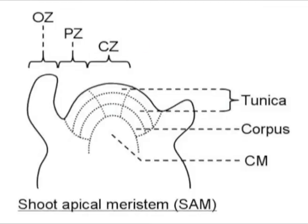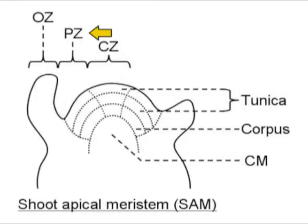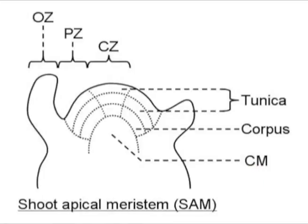The shoot apex can be divided into various regions according to the determined fate of the cells within each region. The central zone consists of small, undifferentiated, and slowly dividing cells. The peripheral zone consists of rapidly dividing cells which later differentiate and mature into various tissues. In the organ zone, cells give rise to leaf primordia; these are older cells of the peripheral zone. The central meristem zone gives rise to the stem interior including vascular tissues, and can be divided into outer layers of cells called the tunica and inner layers of cells called the corpus.